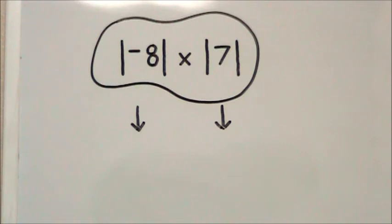In this problem, we're taking the absolute value of negative 8 and multiplying it by the absolute value of 7. The first thing we have to do is determine our absolute values.